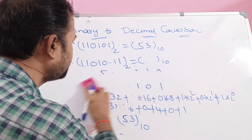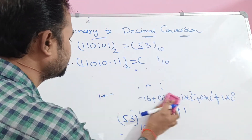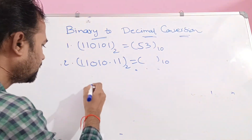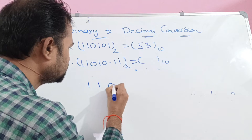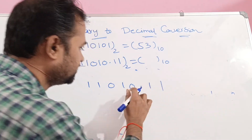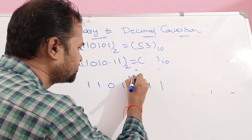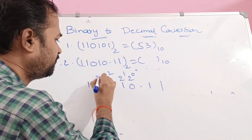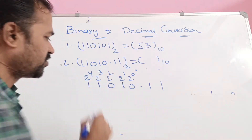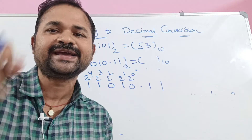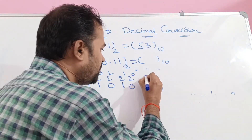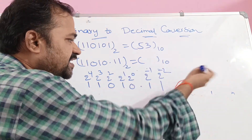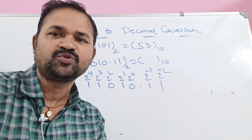Now let us solve the second example: 11010.11 — here we have a decimal point. The number is 11010.11. Reading right to left from the decimal point: 0 is 2 power 0, 1 is 2 power 1, 0 is 2 power 2, 1 is 2 power 3, and 1 is 2 power 4. After the decimal point, we write negative powers: 2 power minus 1, then 2 power minus 2, and so on.